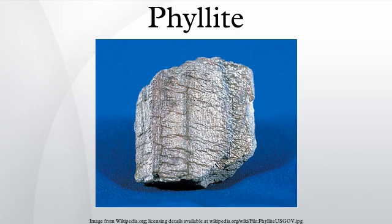Phyllite has fine-grained mica flakes in a preferred orientation, whereas slate has extremely fine clay flakes that achieve a preferred orientation, and schist has large flakes in a preferred orientation. Among foliated metamorphic rocks, it represents a gradation in the degree of metamorphism between slate and schist.